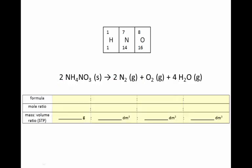So let's give this ratio in various formats so that we can answer questions about it. Pause the movie while you complete this table. We have 2 NH₄NO₃ for every 2 N₂, every 1 O₂, and every 4 H₂O. That's 2 moles of ammonium nitrate for 2 moles of nitrogen, 1 mole of oxygen gas (O₂), and 4 moles of water.